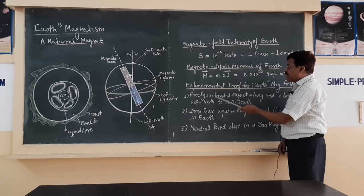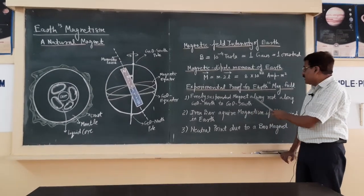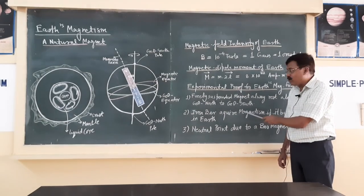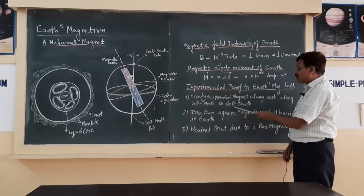The first one is if you freely suspend a magnet in space, it always comes to the condition of rest along geographical north and south.